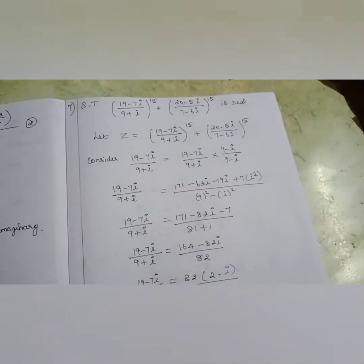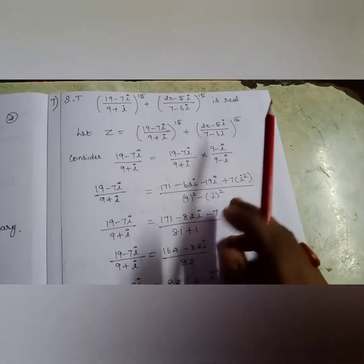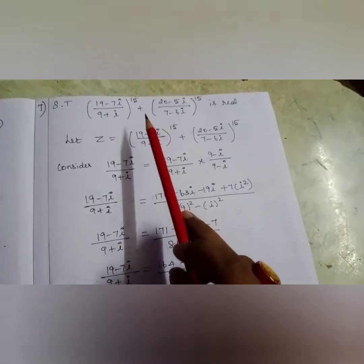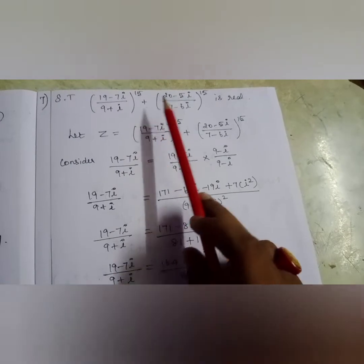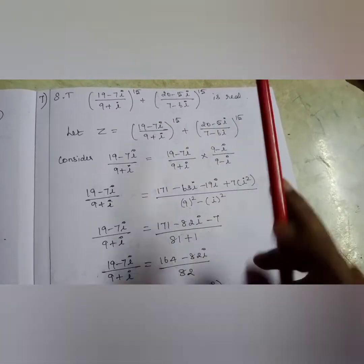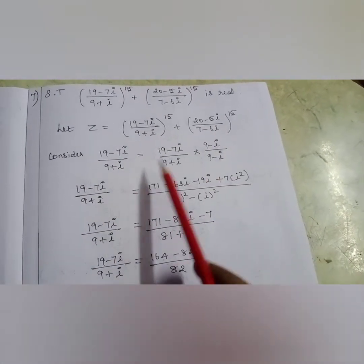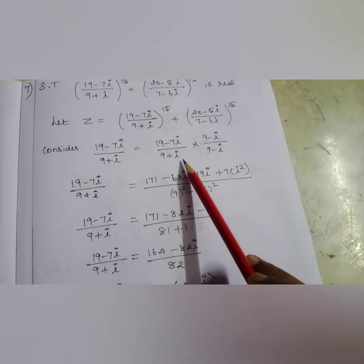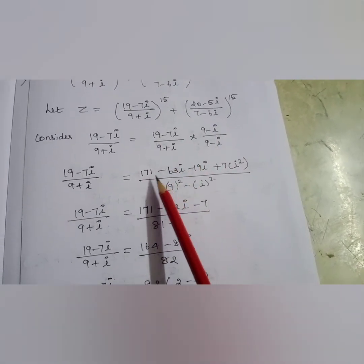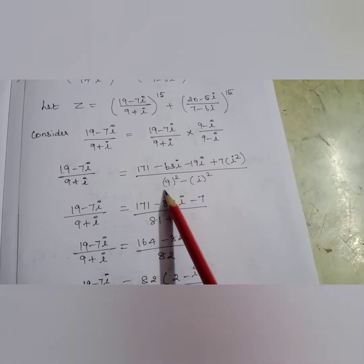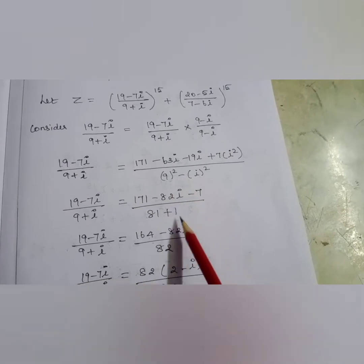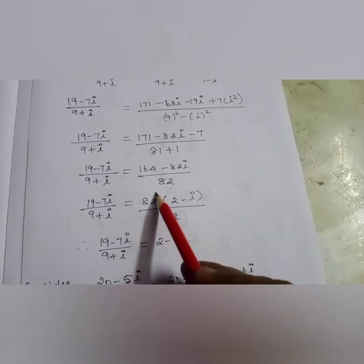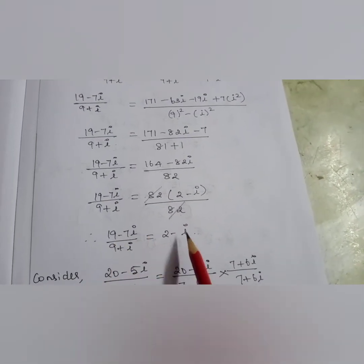Now we move to the 7th sum in the exercise. This is very similar to example 2.8. I am doing the second subdivision — the first subdivision is easy; you can compare it with the example and do it. Second subdivision: [(19 − 7i)/(9 + i)]^15 + [(20 − 5i)/(7 − 6i)]^15 is real. Let z equal the given expression. For the first part, multiply and divide by the conjugate (9 − i). Applying (a + b)(a − b), I get 2 − i.